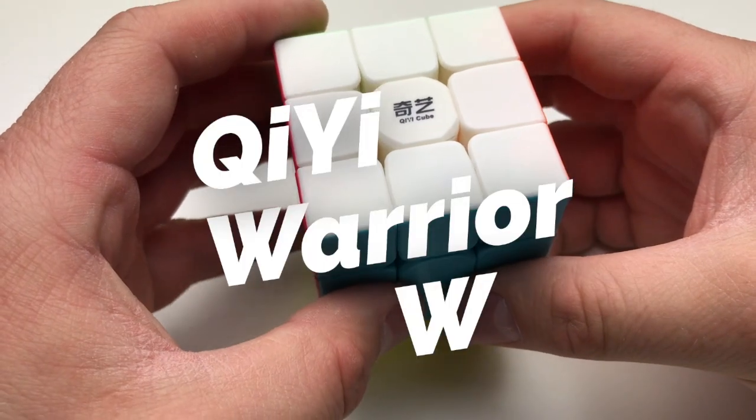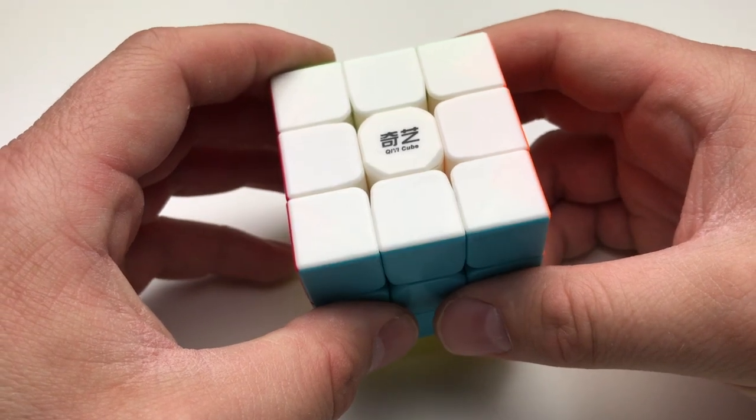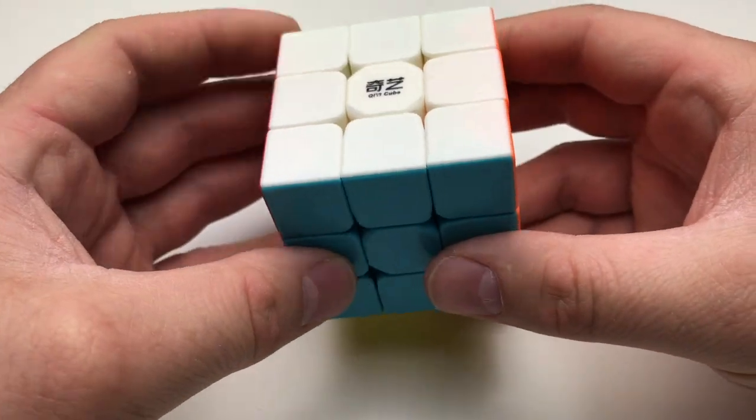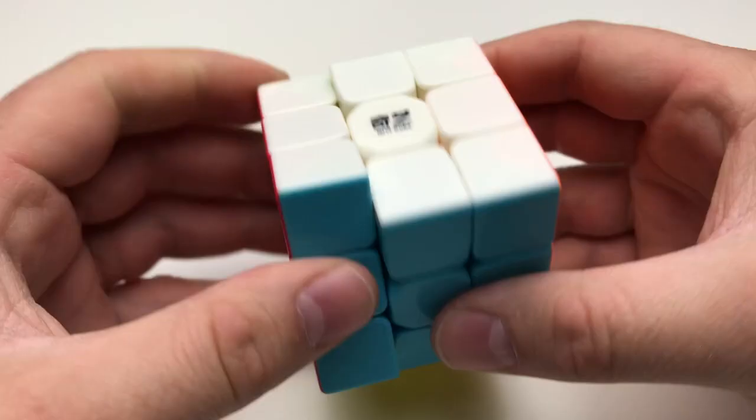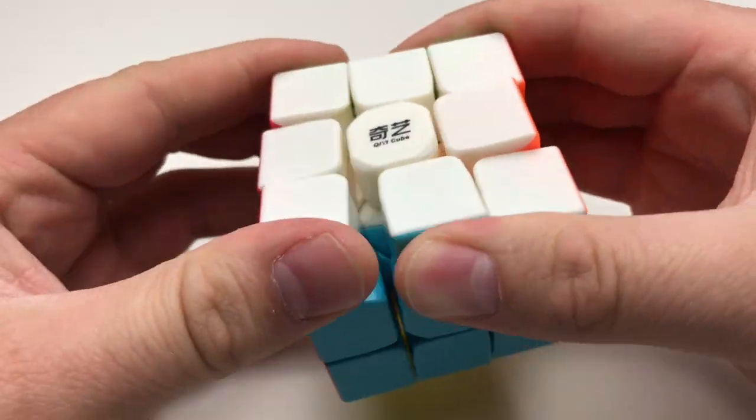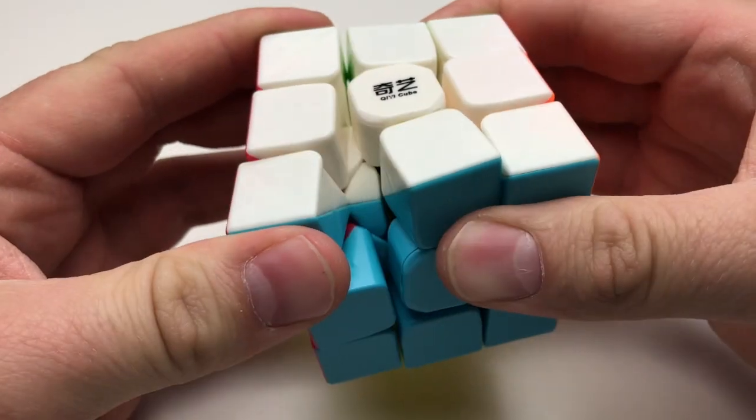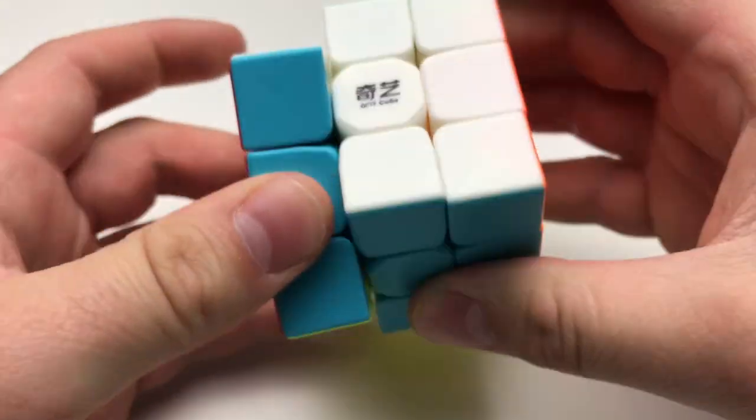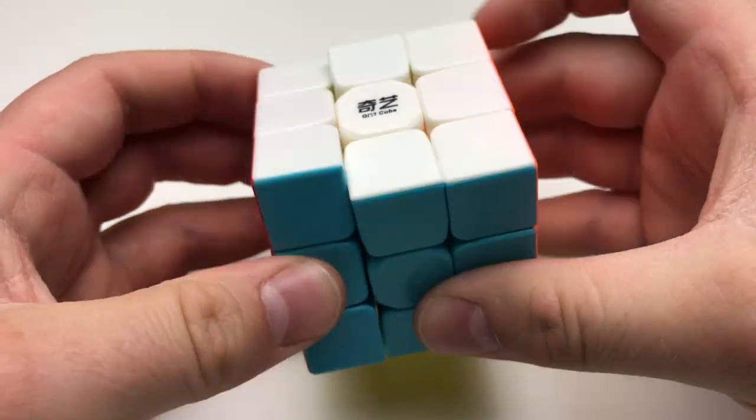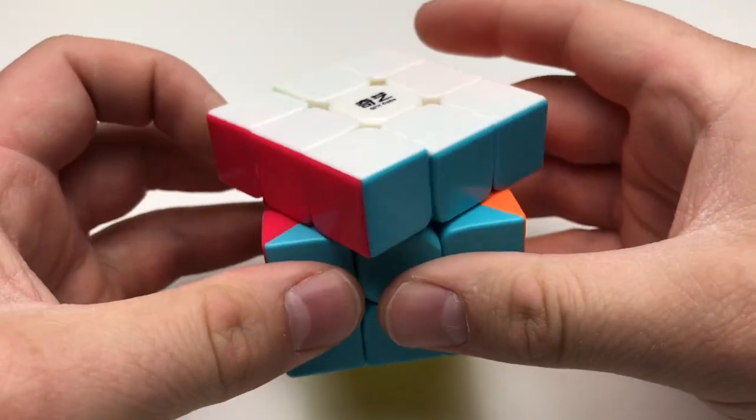So next here, I have the Chi-E Warrior W. So this review is going to be a bit skewed. I've already set this puzzle up, and it's a pretty amazing puzzle for the price, especially now that I've lubed it, all the joints, and the corner and edge pieces. So the piece separation compares to the Yushin Little Magic, but it feels more stable. Corner cutting is also just as good. It cuts around that 45-degree mark and maybe a little bit past.